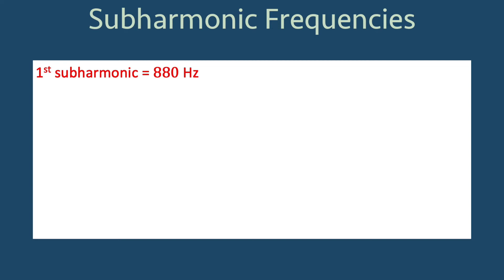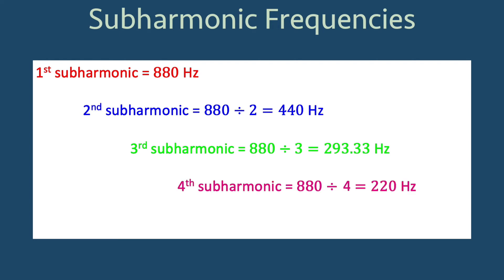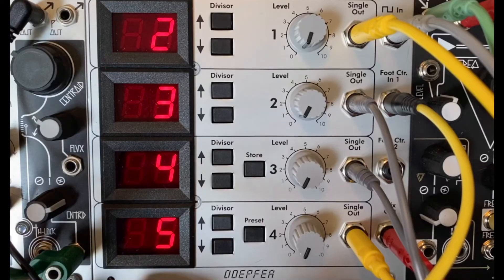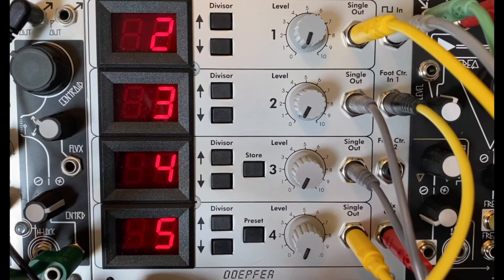The first subharmonic again is the fundamental 880 Hz. We get the second subharmonic by dividing by 2, so we get 440 Hz. The third subharmonic we get by dividing by 3, which gives us 293.33 Hz. We get the fourth subharmonic by dividing by 4, and we get 220 Hz. And then the fifth subharmonic we get by dividing by 5, and we get 176 Hz. Let's listen to those using the Dopfer subharmonic generator.